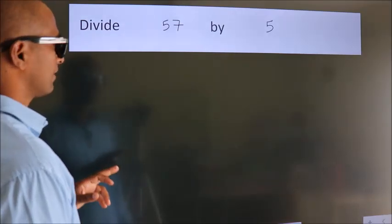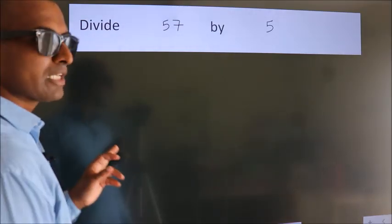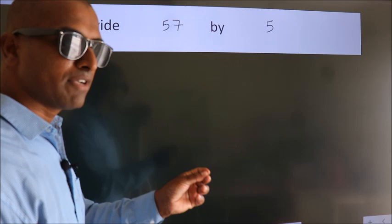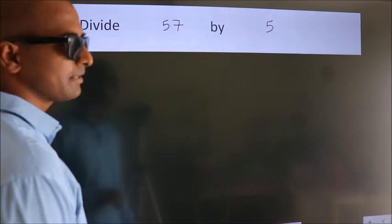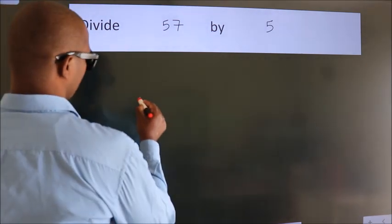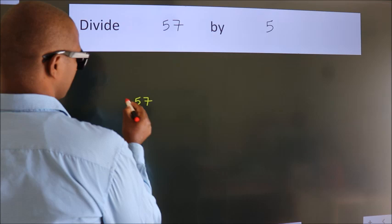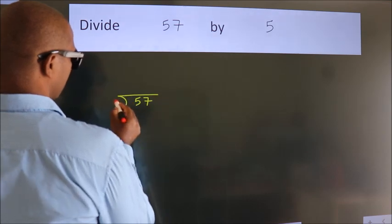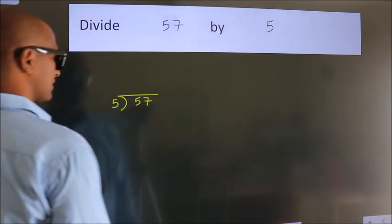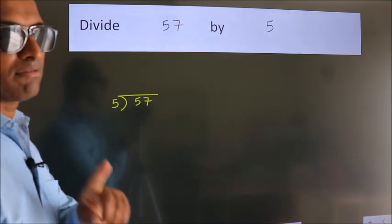Divide 57 by 5. To do this division, we should frame it in this way. 57 here, 5 here. This is your step 1.